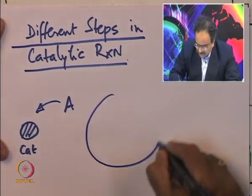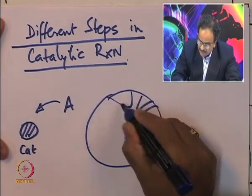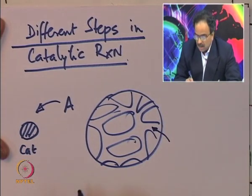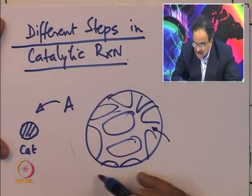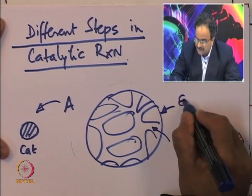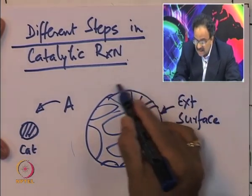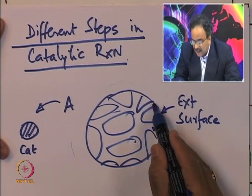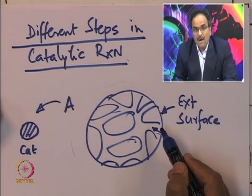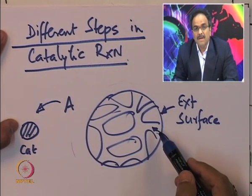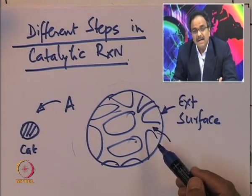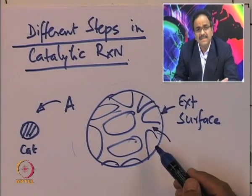The reactant must first overcome the resistance offered by the environment near the external surface of the catalyst, and after that the molecule has to travel through the pores — a different type of resistance offered by the particle. So there are two different resistances: one external, one internal. For the reactant to reach the catalyst surface, adsorption takes place, and then of course reaction, and the same thing will happen for the product.